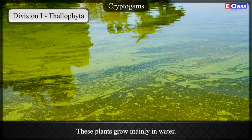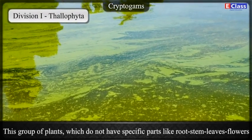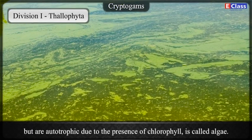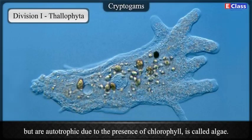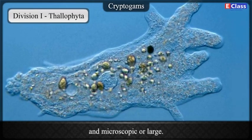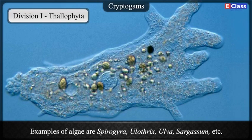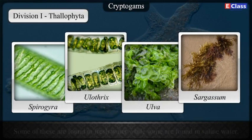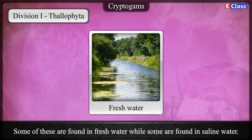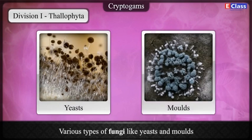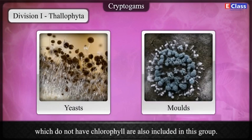Division 1 — Thallophyta: These plants grow mainly in water. This group of plants, which do not have specific parts like root, stem, leaves, or flowers but are autotrophic due to the presence of chlorophyll, is called algae. Algae show great diversity — they may be unicellular or multicellular and microscopic or large. Examples include Spirogyra, Ulothrix, Ulva, Sargassum, etc. Some are found in fresh water while some are found in saline water. These plants usually have a soft and fibre-like body. Various types of fungi like yeast and moulds, which do not have chlorophyll, are also included in this group.